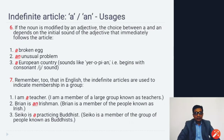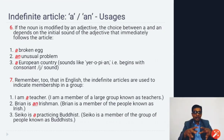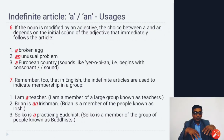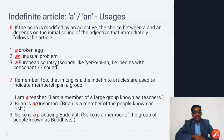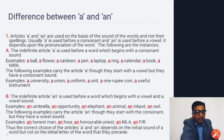Remember that in English, indefinite articles are used to indicate membership in a group. For example: 'I am a teacher' — I belong to the large group known as teachers. When speaking about nationality: 'Brian is an Irishman' — if the first letter of the nationality has a vowel sound, use 'an', otherwise use 'a'. Example: 'Siyako is a practicing Buddhist.'